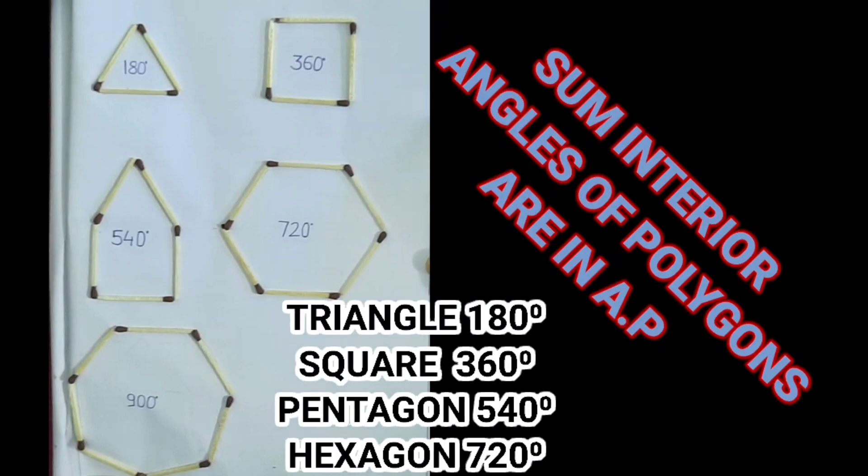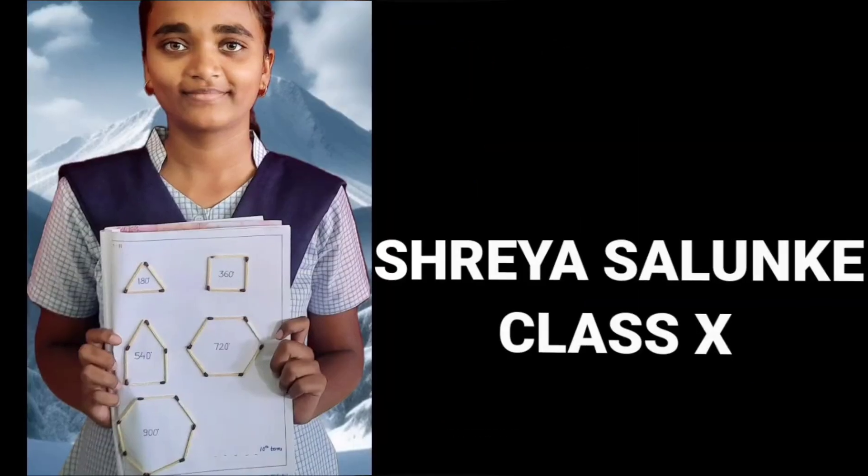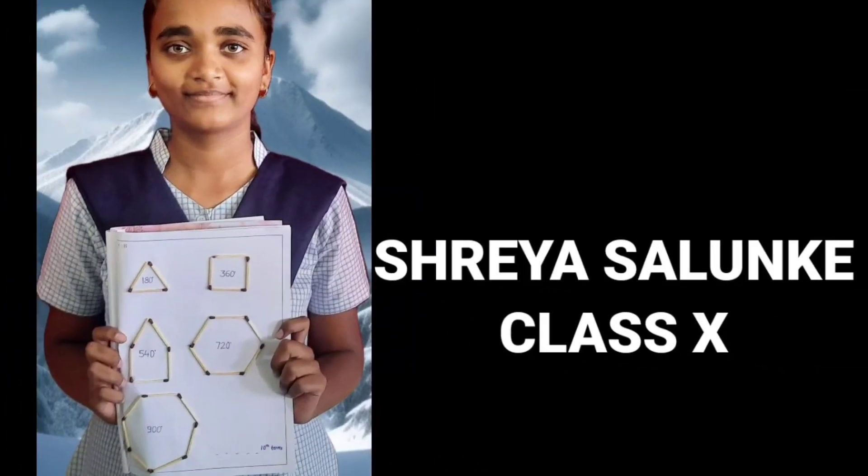square, pentagon, hexagon, and heptagon differ by 180 degrees, which is again an arithmetic progression.